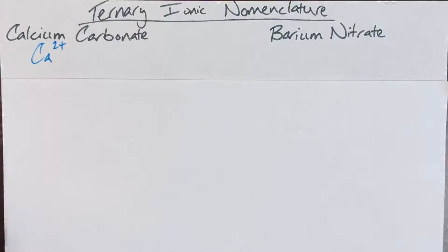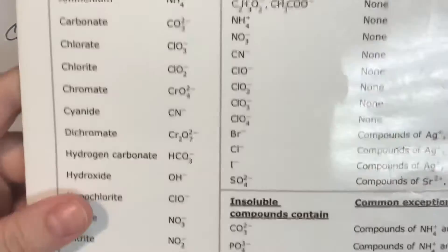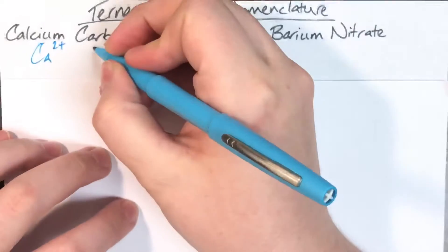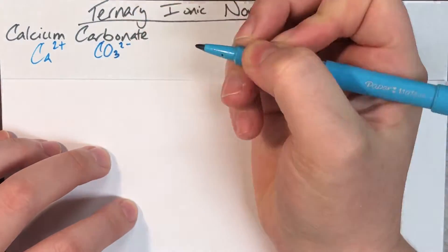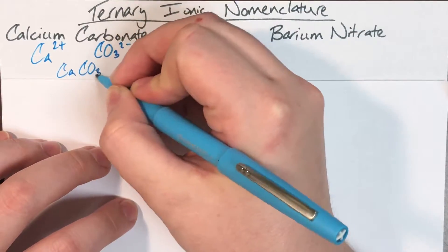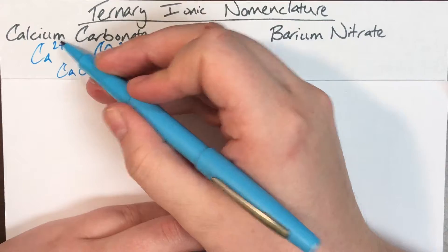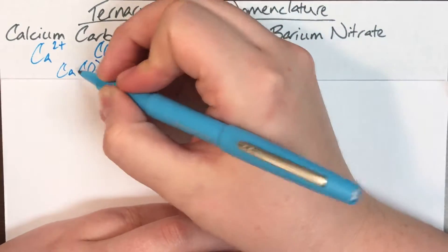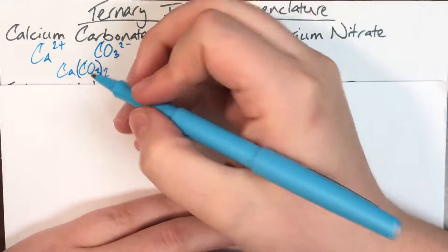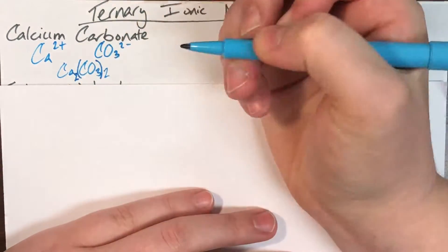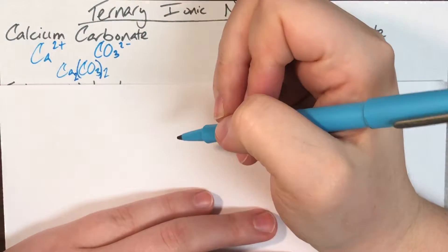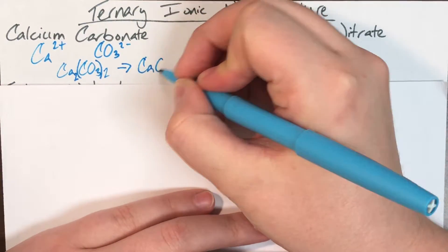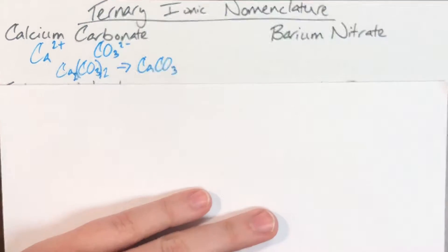Carbonate, ending in '-ate,' tells me it is a polyatomic ion. I'll flip inside my periodic table, find carbonate as CO₃²⁻, and write them together. I exchange charges for subscripts: calcium's 2 becomes carbonate's subscript, but I must protect carbonate with parentheses to avoid implying 32 oxygens. The ratio 2 to 2 simplifies to 1 to 1, giving the final formula CaCO₃.